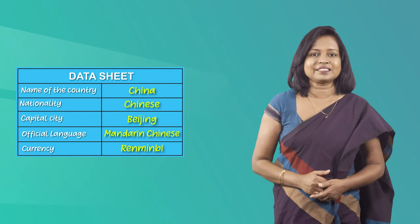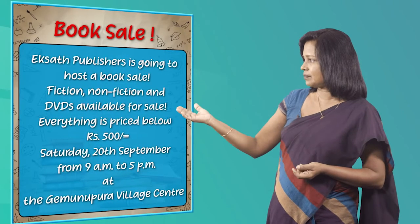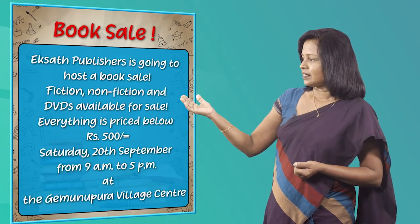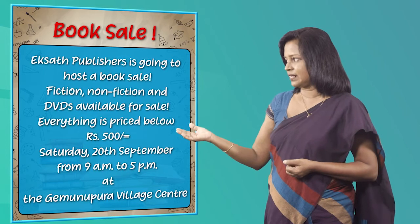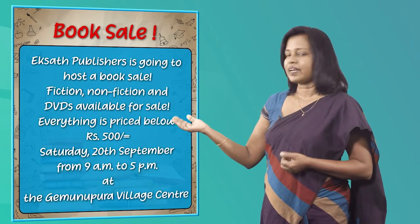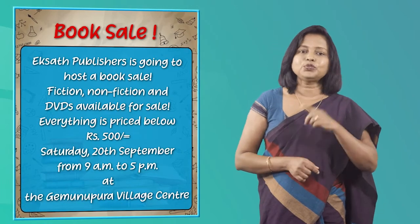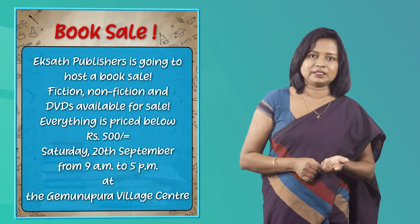I hope you got all the answers correct. Children, now we are going to do another activity. In this situation, you are going to read an advertisement and transfer information into an information sheet. Here both texts are in written form, but the text types are different — one is an advertisement and the other one is an information sheet. Now let's look at this advertisement. It's an advertisement about a particular event, and you are going to read it and transfer the information into an information sheet. Let's do that.